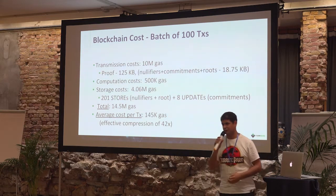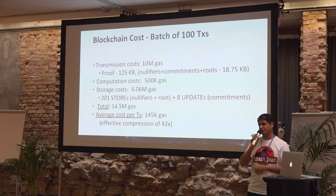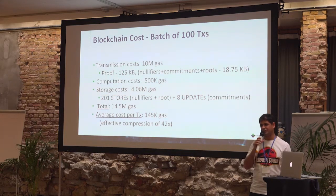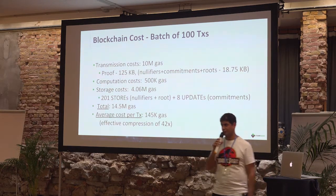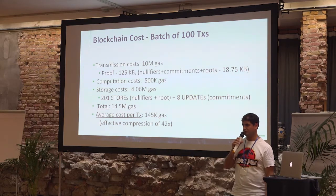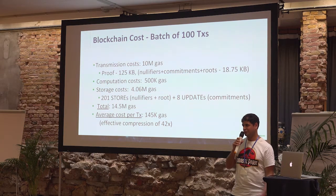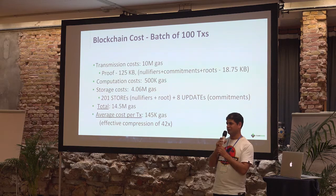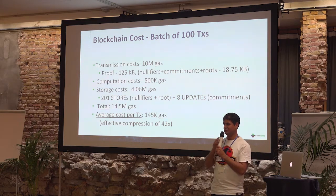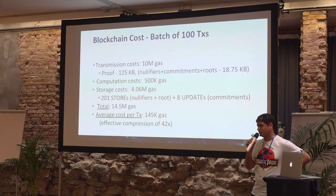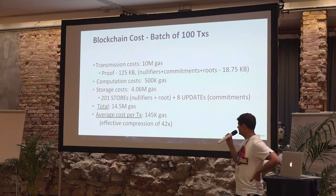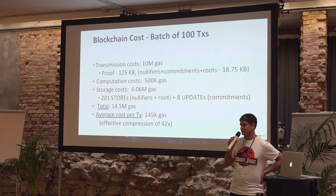Even if it gets 1,000 transactions, it wouldn't take so much time to generate the combined proof. But from the point of the larger proof — if you need to split it into several blocks — the latency will be the latency of those several blocks. If you split the proof to, say, 10 blocks, you're going to have to wait 10 blocks for your transaction to be included.